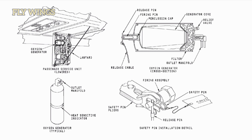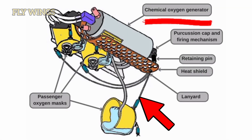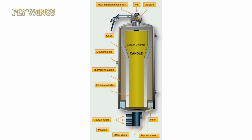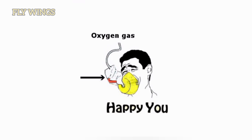The passenger oxygen system uses chemical oxygen generators. The generators are in the passenger service units. Each chemical generator is separate and supplies only its own masks. The masks connect to the chemical generators by flexible tubes. The oxygen generators make oxygen by a chemical reaction.